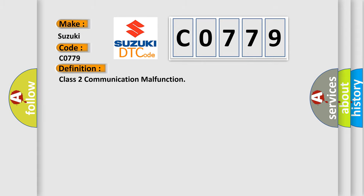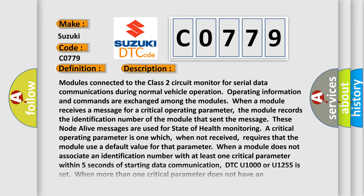The basic definition is Class 2 communication malfunction. And now here is a short description of this DTC code: Modules connected to the Class 2 circuit monitor for serial data communications during normal vehicle operation. Operating information and commands are exchanged among the modules.